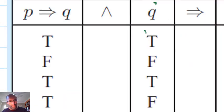Now we've got values for P implies Q, and we need AND Q. We're looking at this part here, AND Q. True and true is true, false and false is false, true and true is true, true and false is false. So we have T, F, T, F.